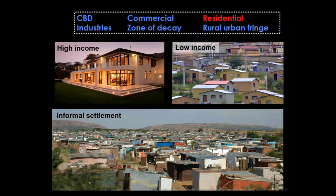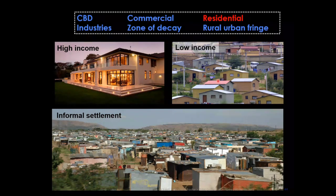Our next one is our residential area. You can see very clearly the different types of residential areas: high income, low income, and informal settlement. The difference is when it comes to low income and the informal settlement. I want you Grade 12 students to please look at the difference between an informal settlement and a low income housing settlement.